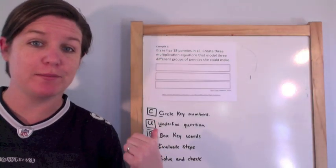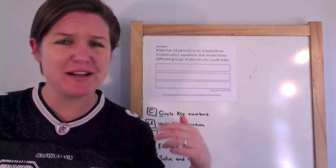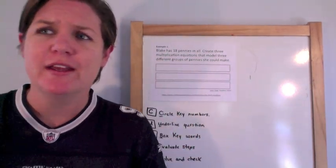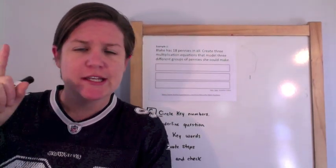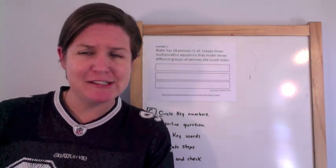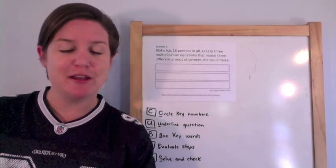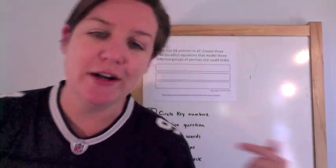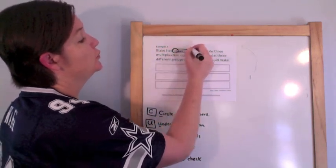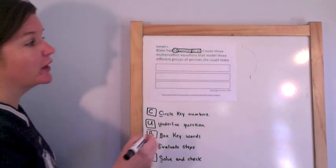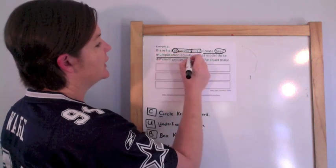So let me teach you. This is Example 1. I'm going to be using my cubes. And by the way, yes, I am representing cowboys — we are Cowboys fans, this is a shout out to my family and the Cowboys. Alright, moving on. So Blake has 18 pennies in all — that shows our total.